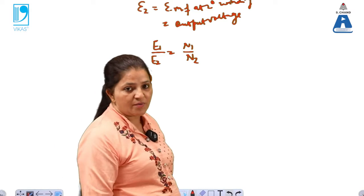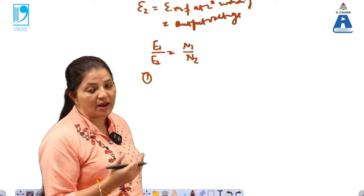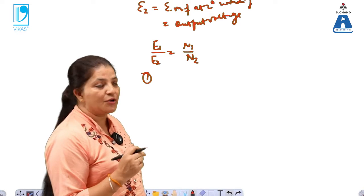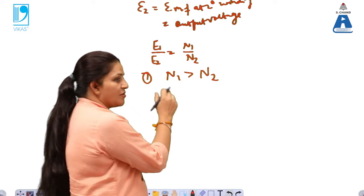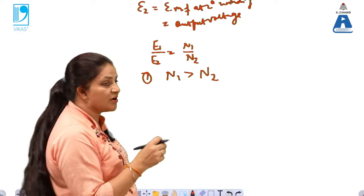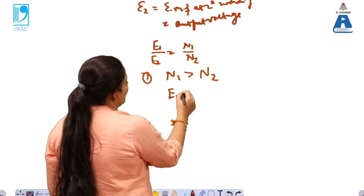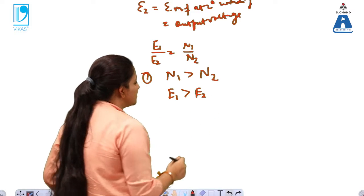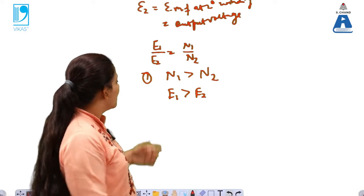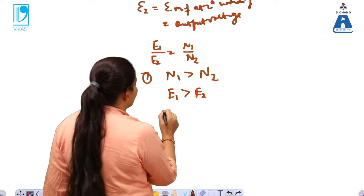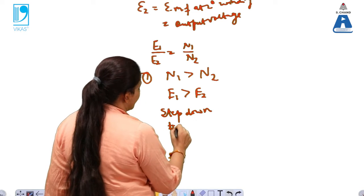In a transformer, the number of turns can be adjusted since they are related to the primary and secondary windings. In the first case, when N1 is greater than N2 — meaning more turns in the primary than the secondary — we get E1 greater than E2, so the input is more than the output. Since the output is lower than the input, such transformers are known as step-down transformers.